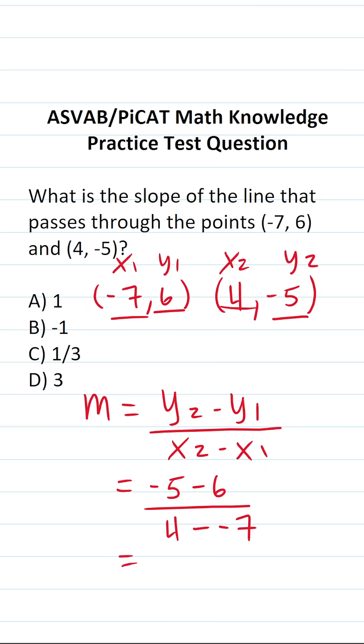Alright, -5 minus 6 is going to be -11. This becomes minus minus, which is plus. 4 plus 7 is 11. We have -11 divided by positive 11. A negative divided by a positive is going to be a negative. So the slope of this line m is going to be negative 1.